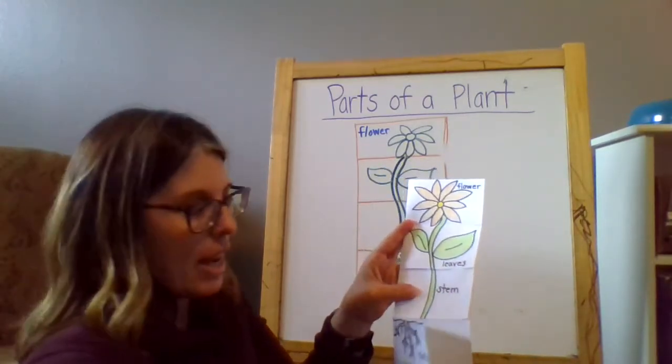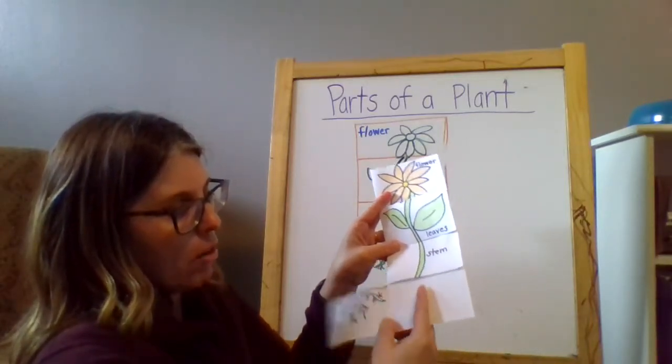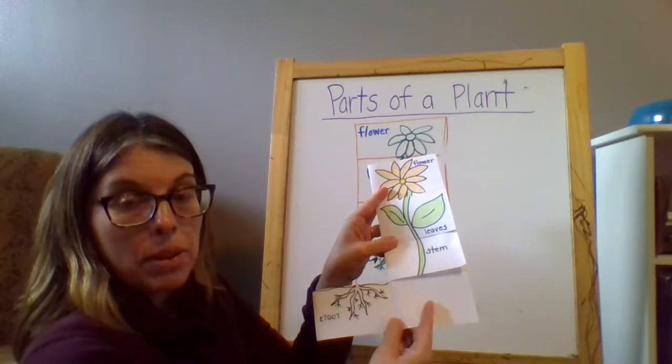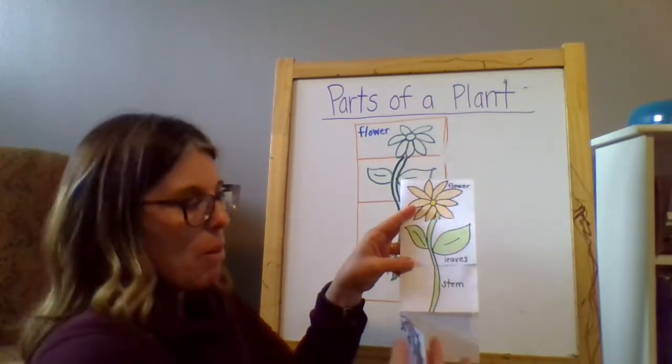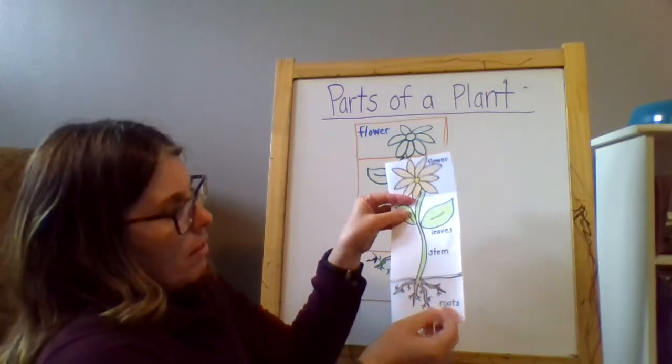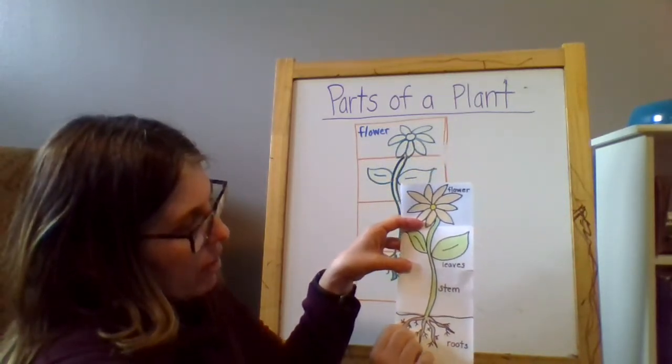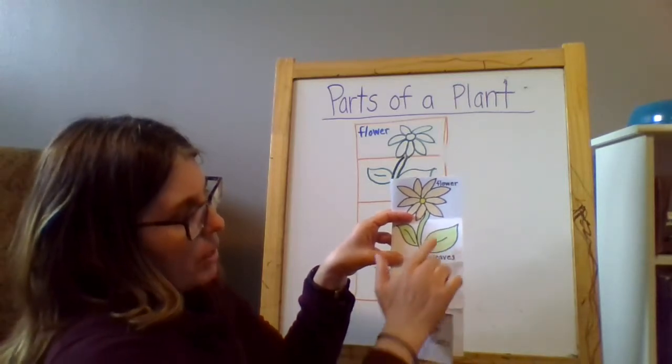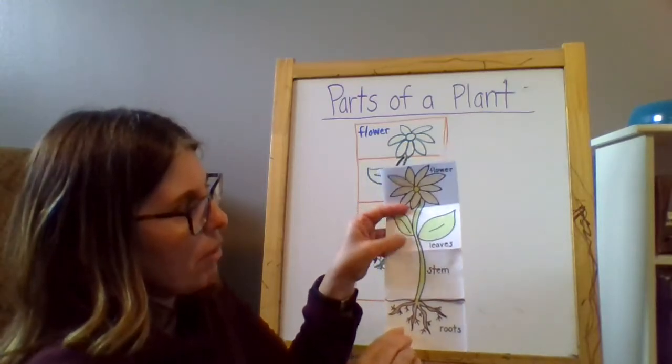And in the coming days, we'll go back and we'll open up this section on roots. And we'll write over in here the job that the roots have. And we'll do that for each of the different parts. But we won't do that part today. Today we're just drawing the plant here, drawing this flower, and we're labeling the parts of the plant.